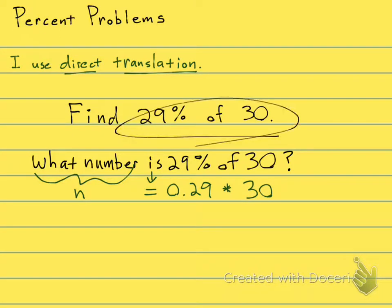Okay, same thing I saw when I looked right here. So, here's my equation, n equals 0.29 times 30.